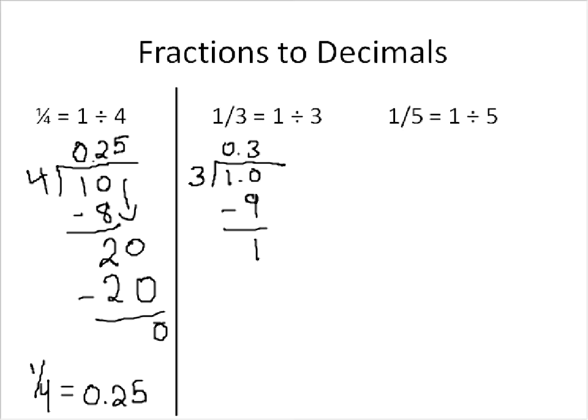10 minus 9 is 1. And 3 goes into 1 0 times. So we're going to have to add another 0 there. Now 3 goes into 10 3 times. And 3 times 3 is 9. Do we see a pattern starting here?